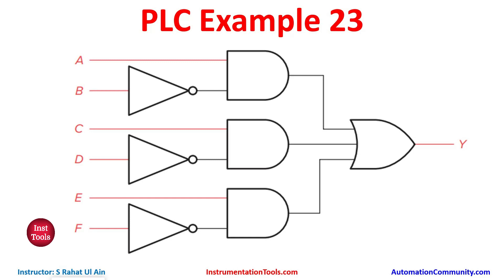We will use normally open contacts for inputs A, C, and E, and normally closed contacts for inputs B, D, and F. We will connect A and B in series, then C and D in series, then E and F in series, and then connect AB, CD, and EF in parallel to implement the OR gate.